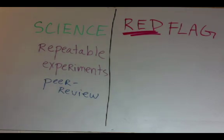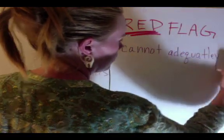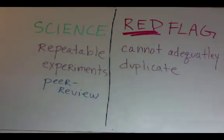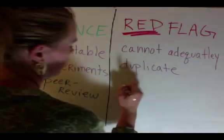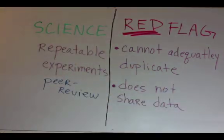Science has repeatable experiments and publishes in peer reviews, where the peers can duplicate this study. However, pseudoscience does not, and usually does not share its data to allow peer review.